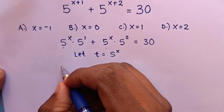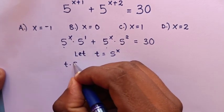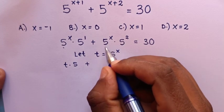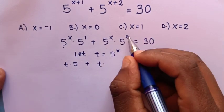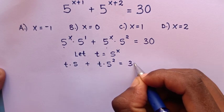We substitute t here: it will be t times 5 power 1, which is 5, plus t times 5 power 2, which equals 30.